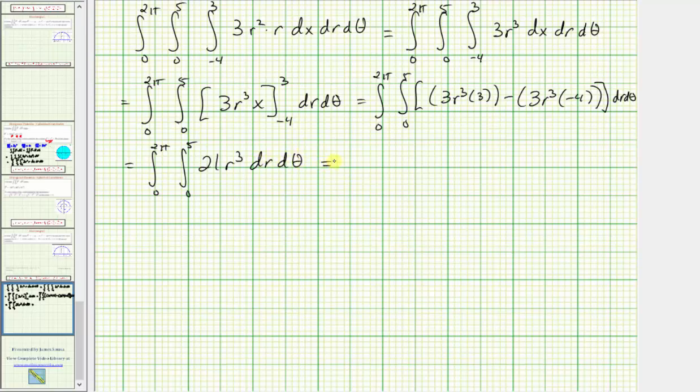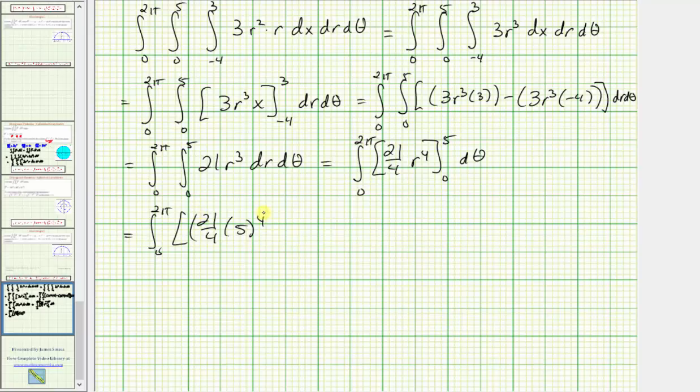And now we integrate this with respect to r. So the antiderivative is going to be 21 times r⁴ divided by 4, or 21/4 r⁴, performing substitution for r. When r is 5, we have 21/4 times 5⁴. And when r is 0, we have zero.